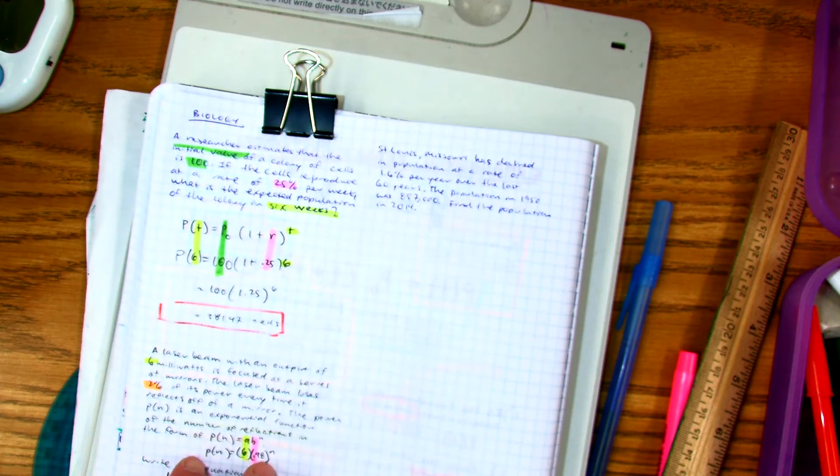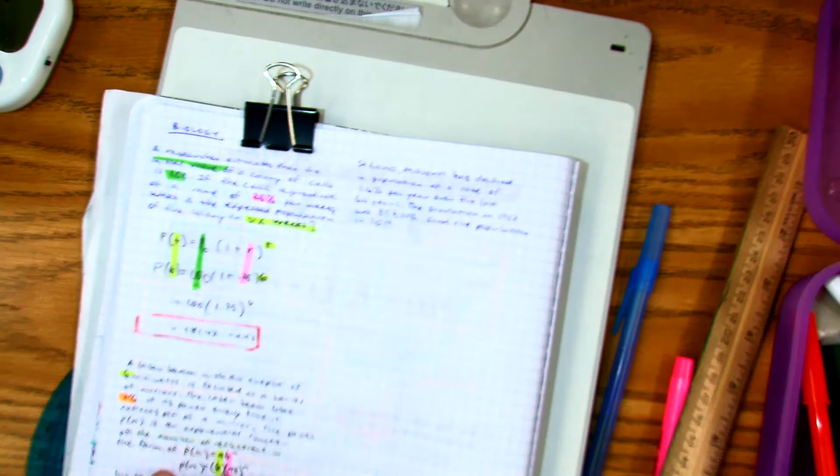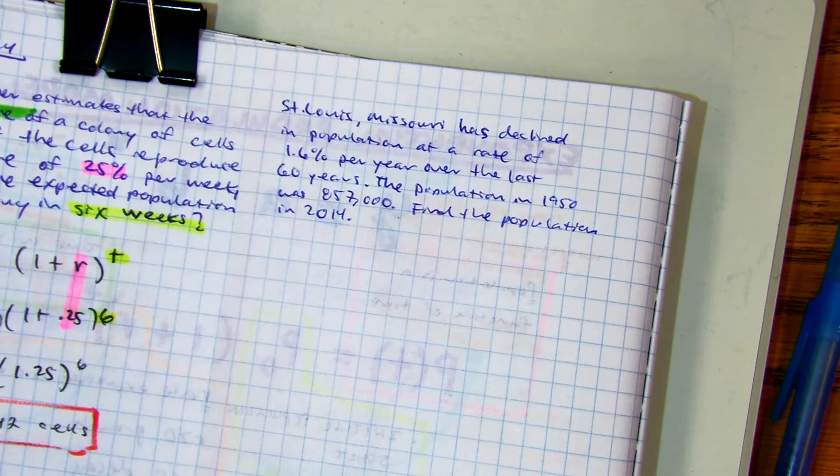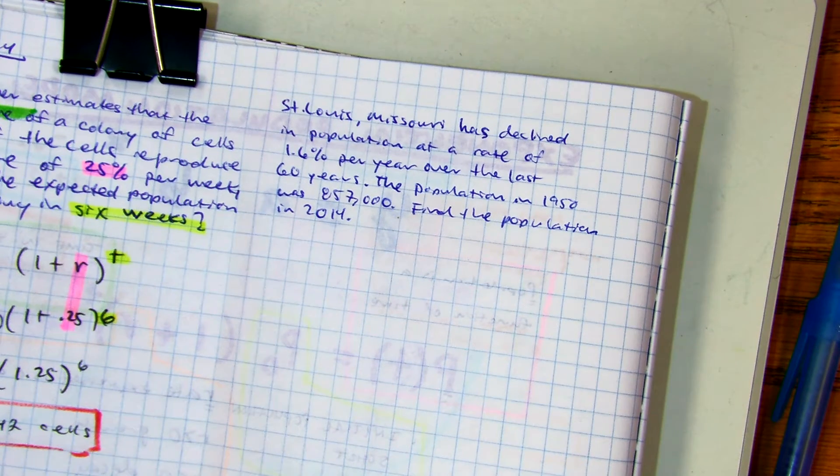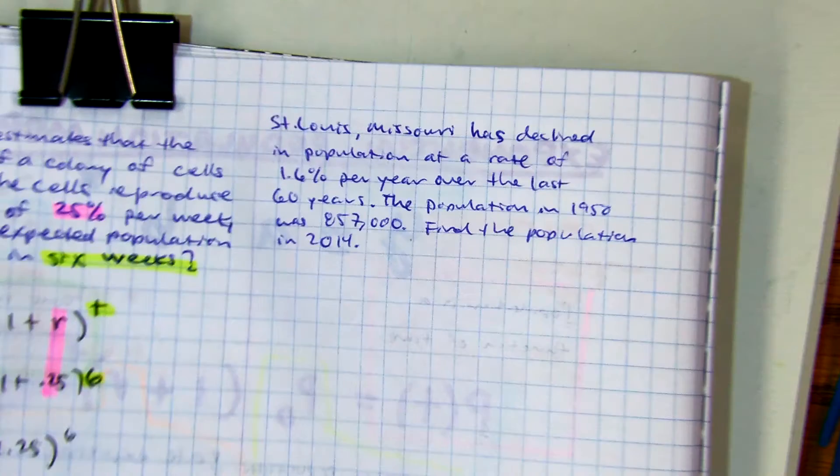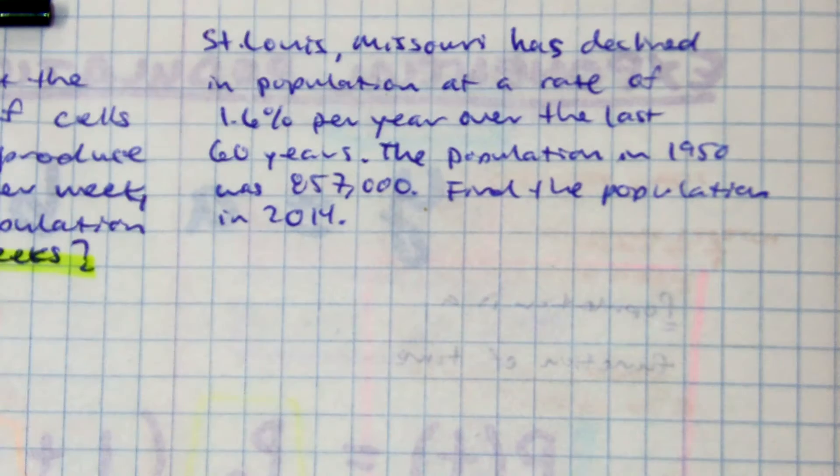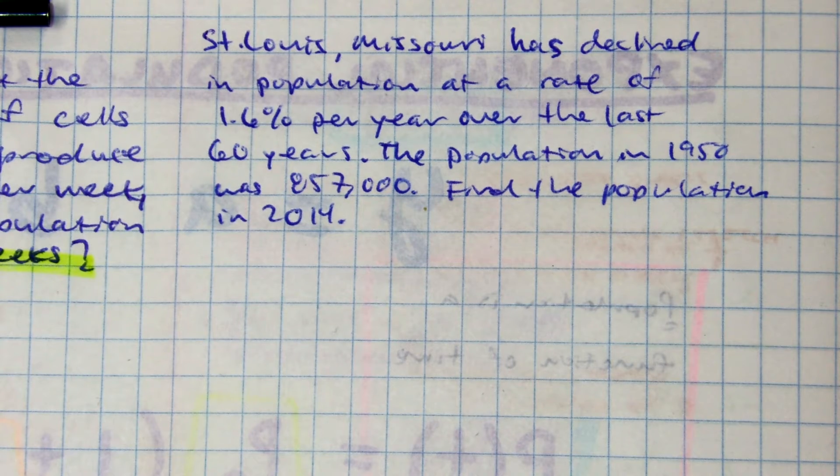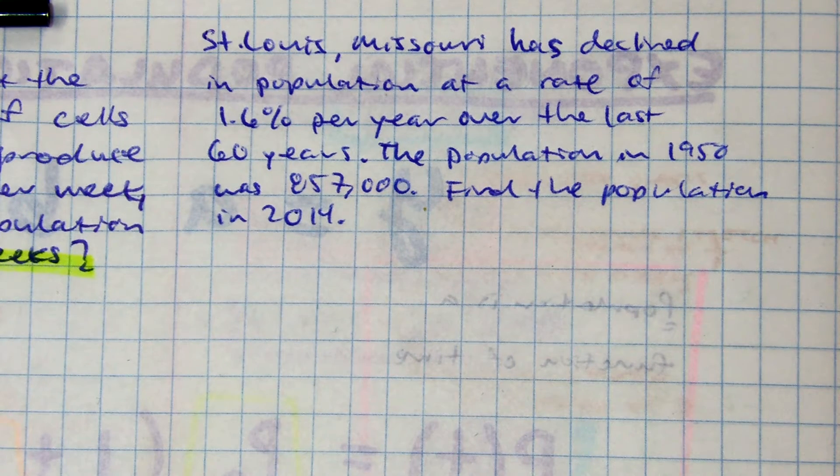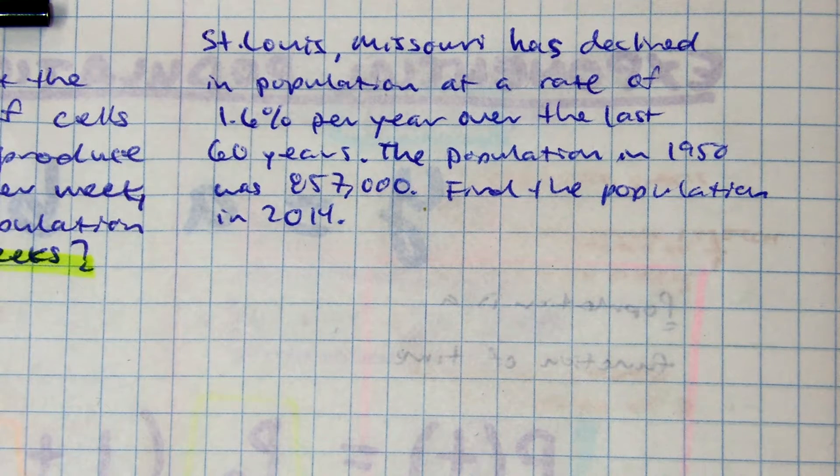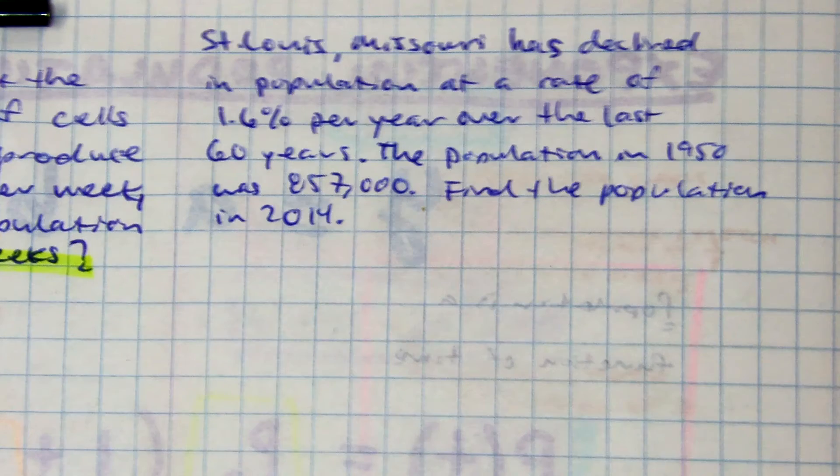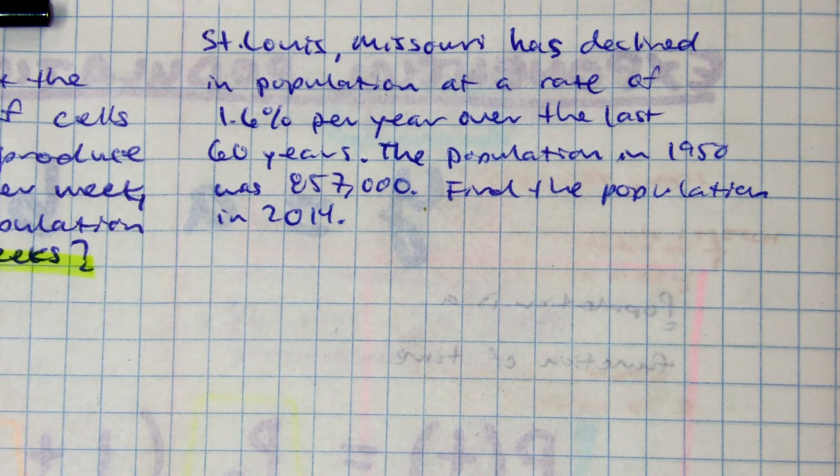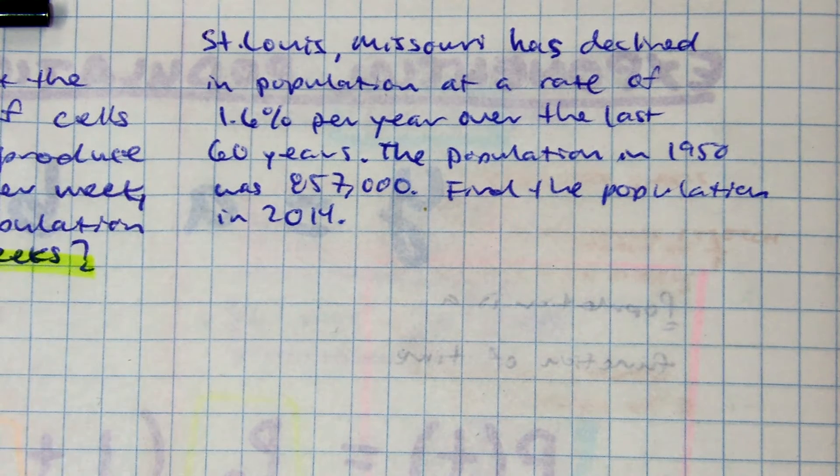Alright, let's go over this word problem. Catherine, read for us. Alright, Christian, what's a formula we can use?